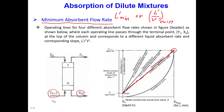These two points are located on the operating line, but at the minimum slope they will also be on the equilibrium line. That means these two will be in equilibrium. So that's the minimum.